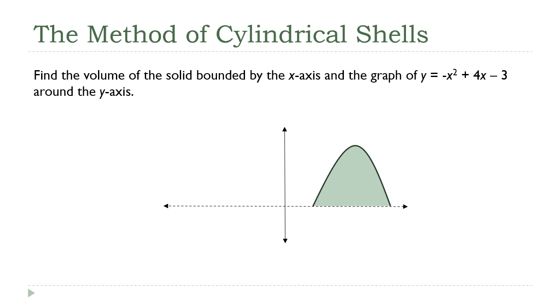If you didn't watch that, there will be a link to it when we get to the end. So what I want to do is I want to take the region formed by the graph of y equals negative x squared plus 4x minus 3 and the x-axis, which is what we've got in the diagram here.